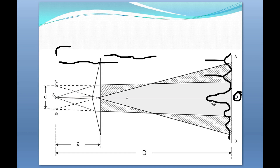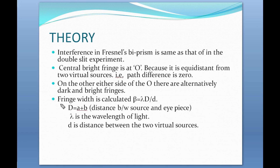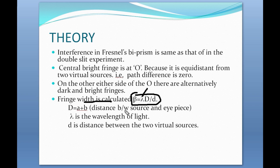There are alternating bright and dark fringes, where the intensity decreases as we move away from the central bright fringe. The fringe width can be calculated using the formula β = λD / d, where D is the distance between the source and the eyepiece — equal to A plus B — λ is the wavelength of the monochromatic light used, and d is the distance between the two virtual sources S1 and S2.